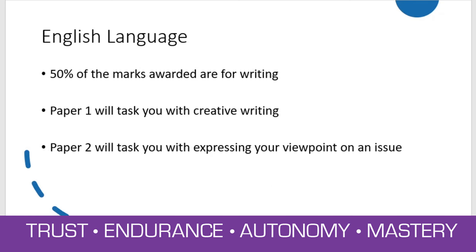It's really important to know that 50% of the marks awarded for this GCSE are for your writing. Paper one will ask you to do some creative writing — either writing a story or doing a piece of descriptive writing. Paper two will ask you to express your viewpoint on something like whether TikTok should be banned for people under 16, or whether the government should make sugary drinks more expensive, and it would be up to you to express your viewpoint in a clear, persuasive and convincing manner. Writing is 50% of your GCSE.